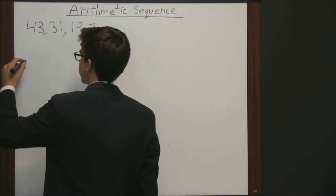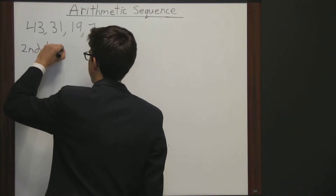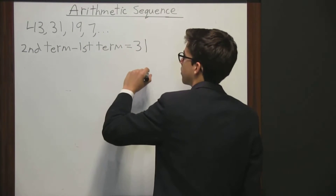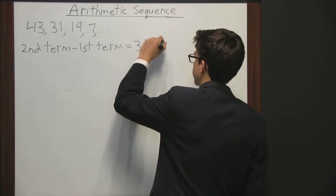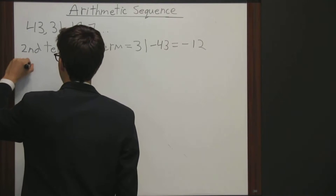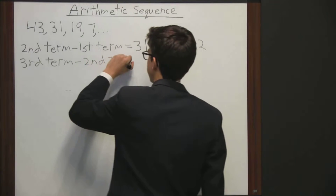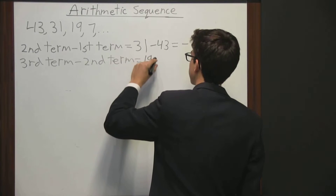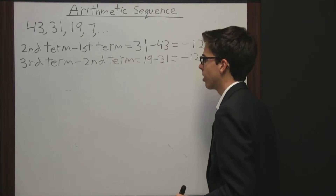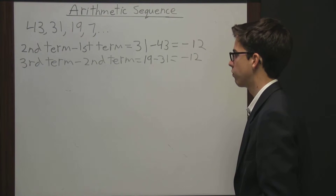So what we're going to do here is we're going to take the second term and do the second term minus the first term. So the second term is 31 minus the first term which is 43, which gives us negative 12. Now if we were to continue that and do the third term minus the second term, then we get 19 minus 31, which again gets us negative 12. So we're realizing here that each successive number is 12 less than the one before it.